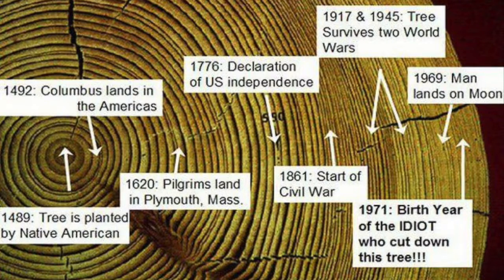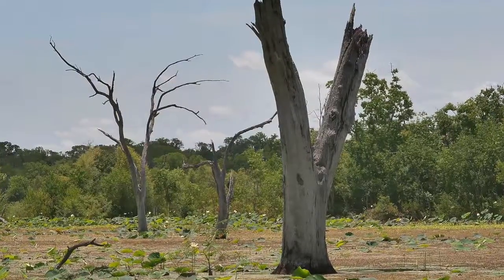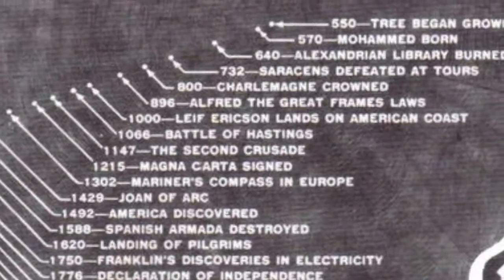For cores taken from living samples, this is done by marking the last complete growth ring and associating it with the year before the sample was taken. The rings are then counted from outermost to innermost, determining which year each ring was from. For cross-sections taken from dead samples, they must first be cross-dated with living samples from the same area and preferably of the same species, to determine which year the outermost complete growth ring is from. After this has been done, each growth ring is associated with a year using the same method as the living cores.